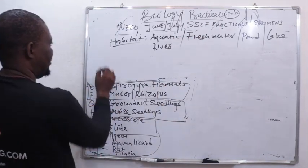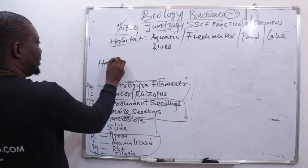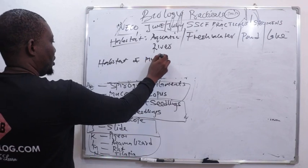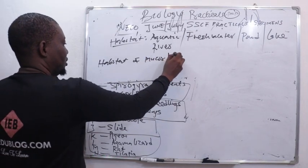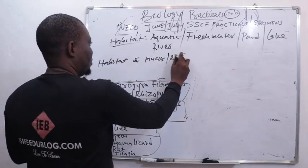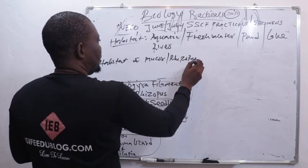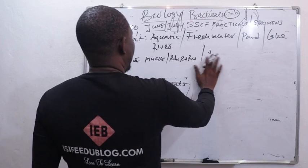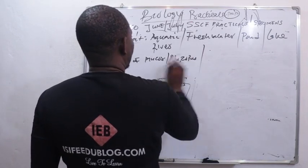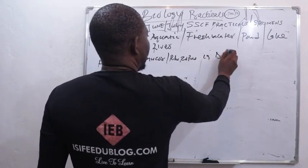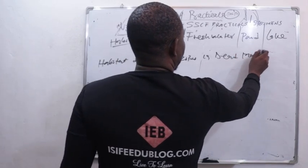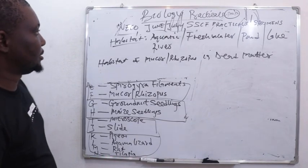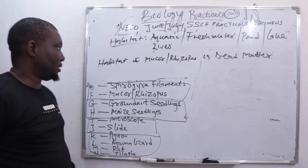So let's look at the habitat of Specimen F, which is Rhizopus. Rhizopus is found on dead matter. The habitat of Rhizopus is dead matter — on dead matter, or dead things.